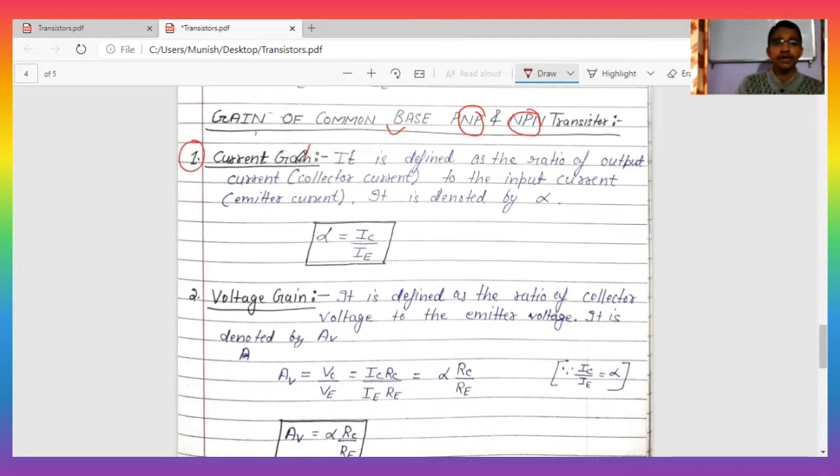Current gain is denoted by alpha. Basically, current gain is the ratio of output upon input. The output is collector current IC and the input is emitter current IE. So the ratio of collector current and emitter current is called alpha, the current gain. Alpha equals IC by IE.